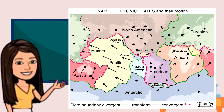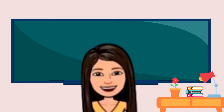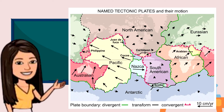Can you see the arrows on the map? Get your paper and pen and try to draw the arrows. What do you notice? The arrows show different directions.